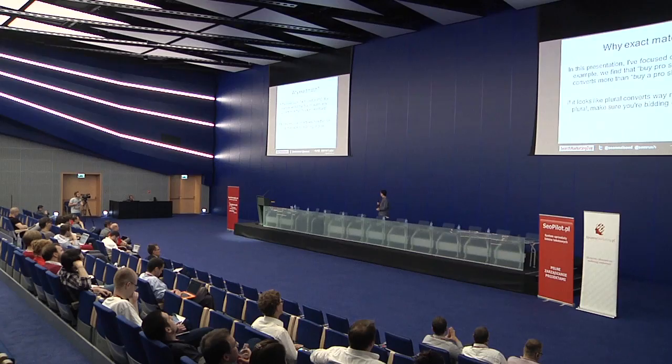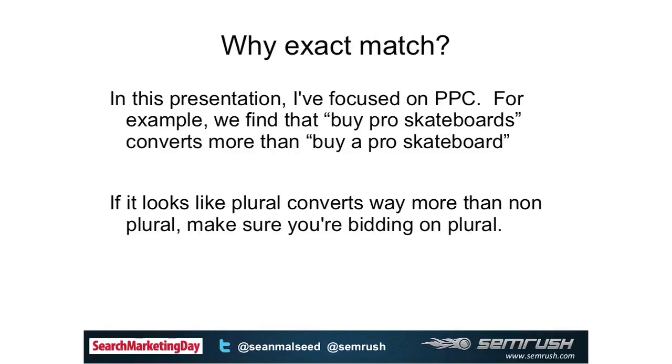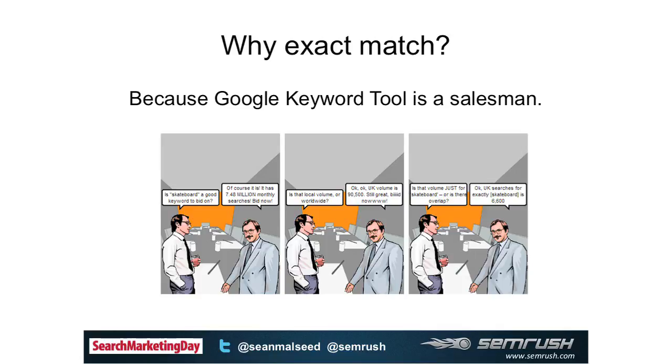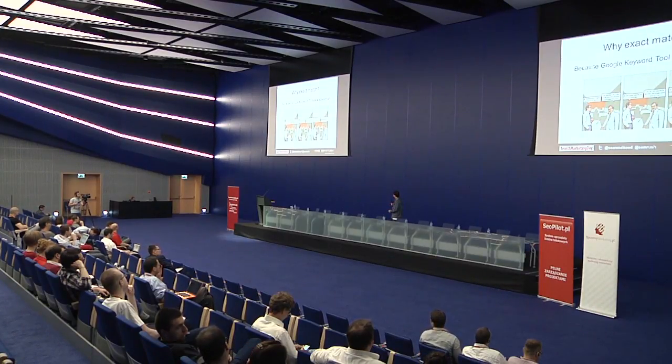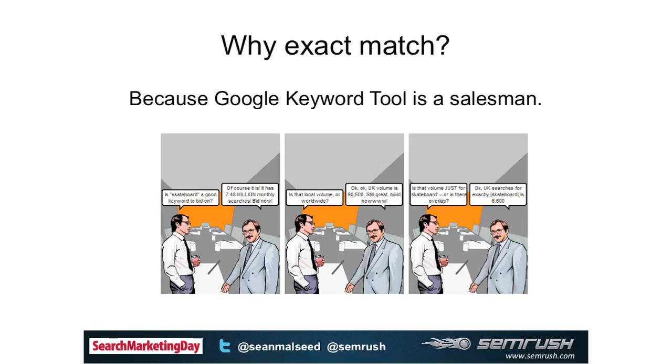For example, 'buy pro skateboards' might convert more than 'buy a pro skateboard,' so we want to bid on the one that actually converts. Google Keyword Tool is basically a salesman - their goal is not to help you make the most money possible, not to sell you the highest converting keywords. They just want to sell you keywords in general that people will click on. So by default they show you broad match results and every keyword looks so great - you kind of have to haggle with them a little bit.